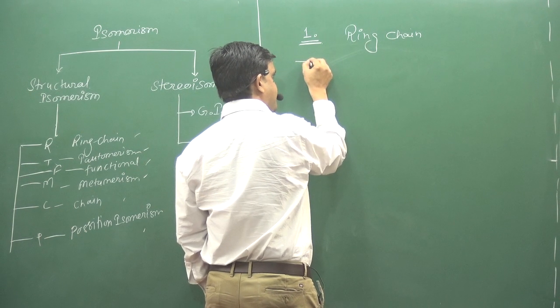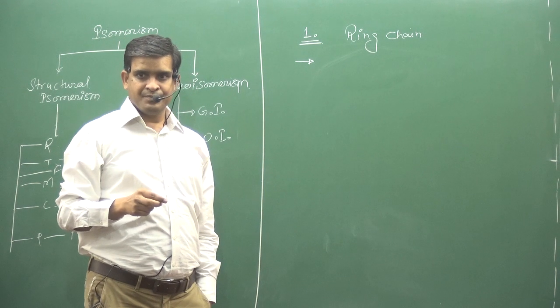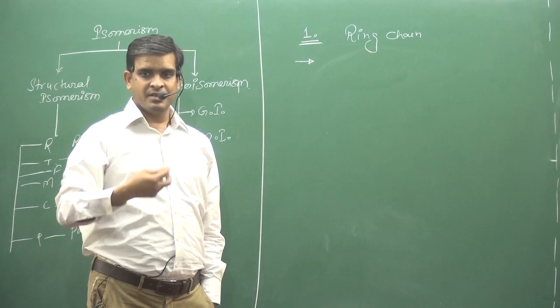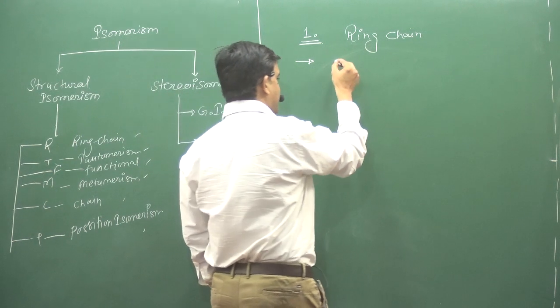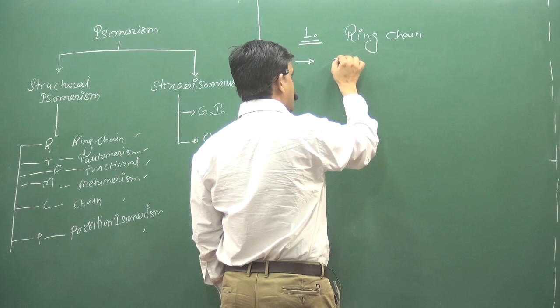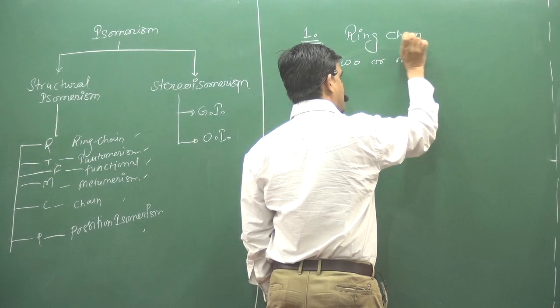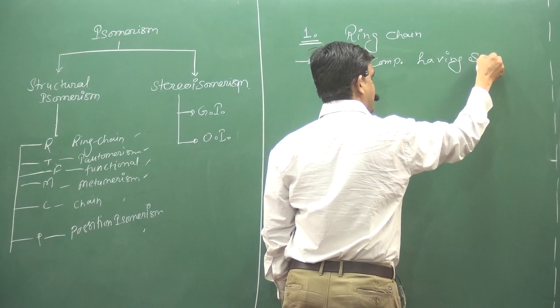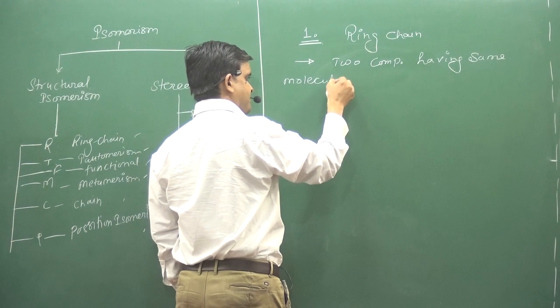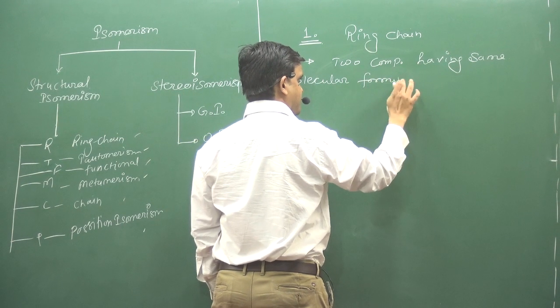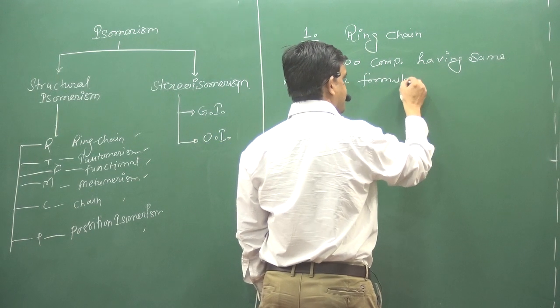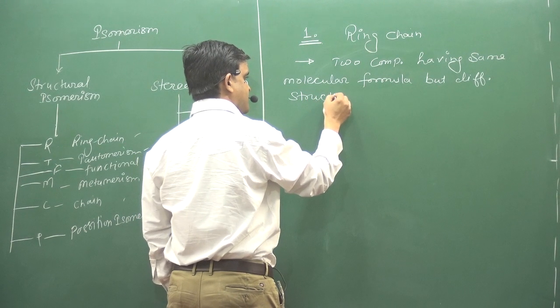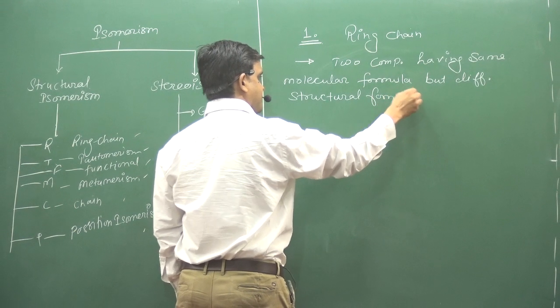What is the definition? The definition is simple. Two or more compounds having same molecular formula but different structural formula. Because one is ring and other is chain. Two compounds having same molecular formula but different structural formula.